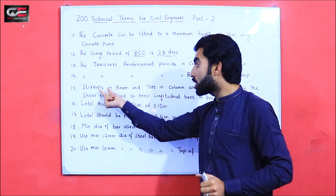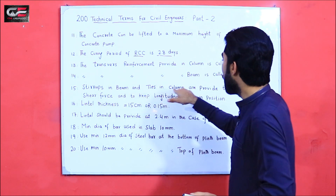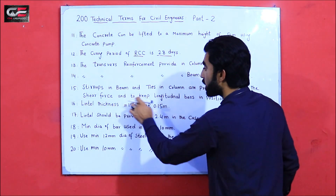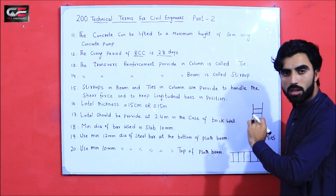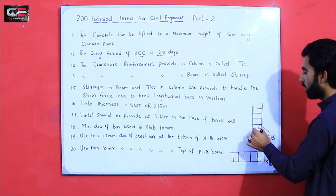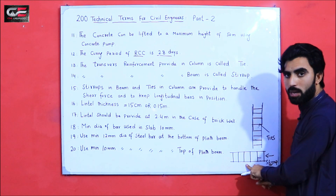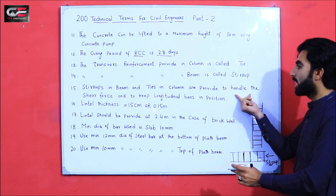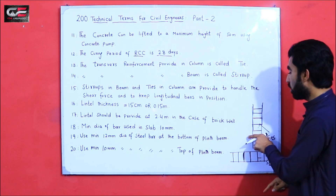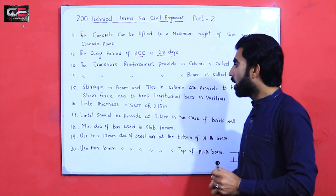Term 15: Stirrups in beams and ties in columns are provided to handle shear force and to keep the longitudinal bars in position. If you don't provide ties in an RCC column, the longitudinal bars won't stay in position. Similarly, in an RCC beam, without stirrups the bars cannot be held in place and shear force cannot be resisted. They keep the main bars in position in both beams and columns.